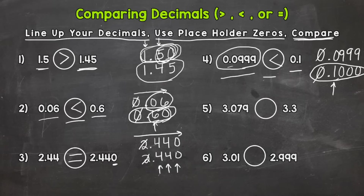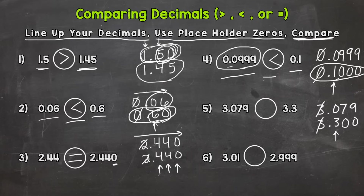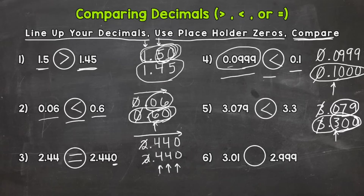Let's take a look at number five. Line them up, add our placeholder zeros, and now we can compare. We have threes in the ones place — can't compare. Looking at the tenths: we have a three compared to a zero, so obviously that three is greater. So three and three tenths is the greater number. Or you can think of it as three hundred thousandths compared to seventy-nine thousandths — obviously three hundred out of a thousand is greater than seventy-nine out of a thousand. So you would read this as: three and seventy-nine thousandths is less than three and three tenths.